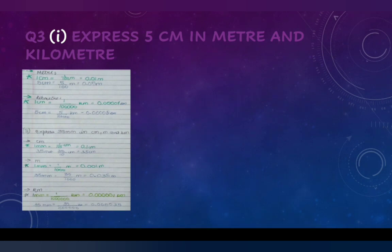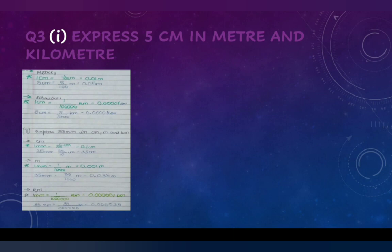The second part is to convert 35 millimeters into centimeters, meters, and kilometers. 35 mm divided by 10 equals 3.5 centimeters. Since 1 millimeter equals 1/1000 meter, 35 mm equals 35/1000 = 0.035 meters. In kilometers, it equals 0.000035 km.